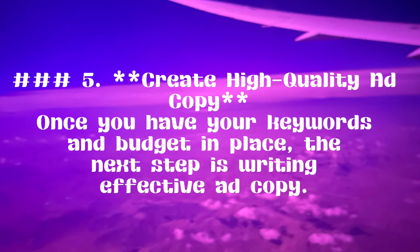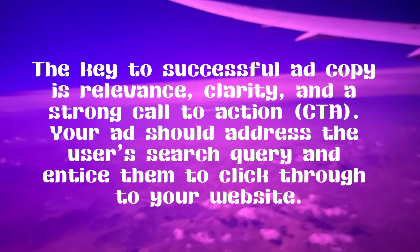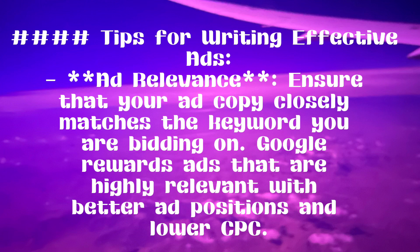Number five: Create high-quality ad copy. Once you have your keywords and budget in place, the next step is writing effective ad copy. The key to successful ad copy is relevance, clarity, and a strong call to action (CTA). Your ad should address the user's search query and entice them to click through to your website. Ad relevance: ensure that your ad copy closely matches the keyword you are bidding on — Google rewards highly relevant ads with better ad positions and lower CPC.